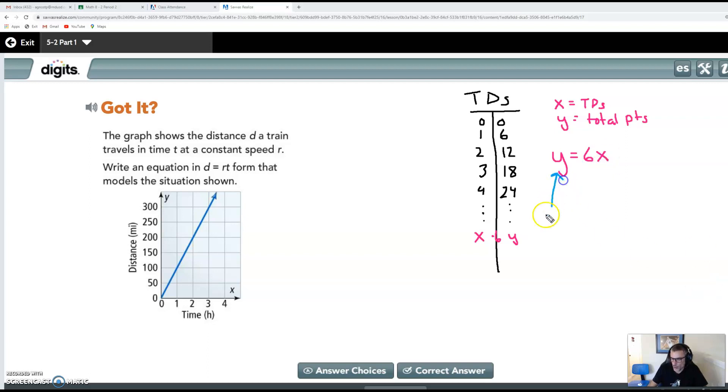This is my points. This is how many points I get per touchdown. This is per TD. And this last part is the number of touchdowns. So that's what we're going to be doing. We're going to be looking at different situations and we're just going to be writing an equation. And all the equations are going to be in this format. We call it in general terms, we call it y equals mx.